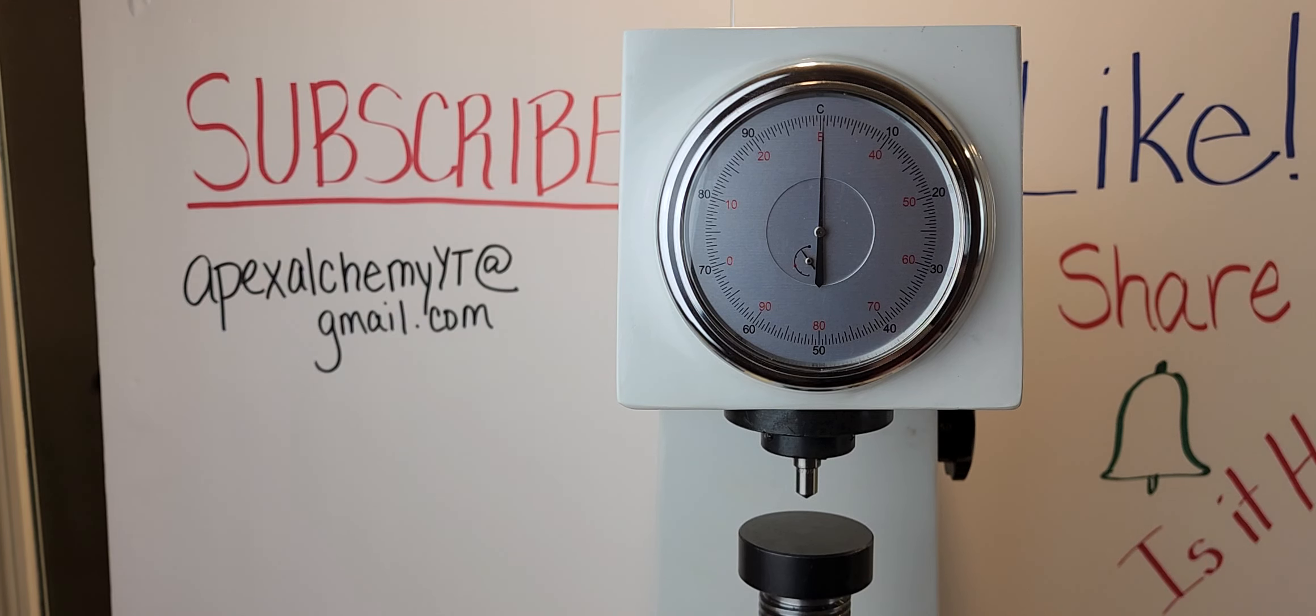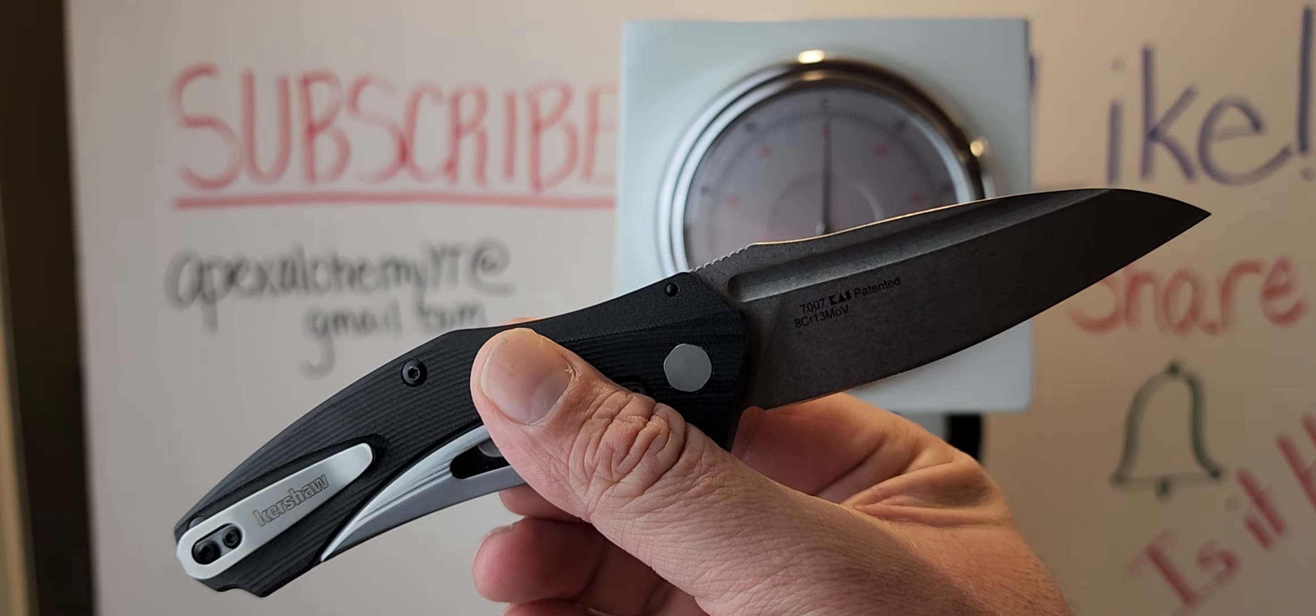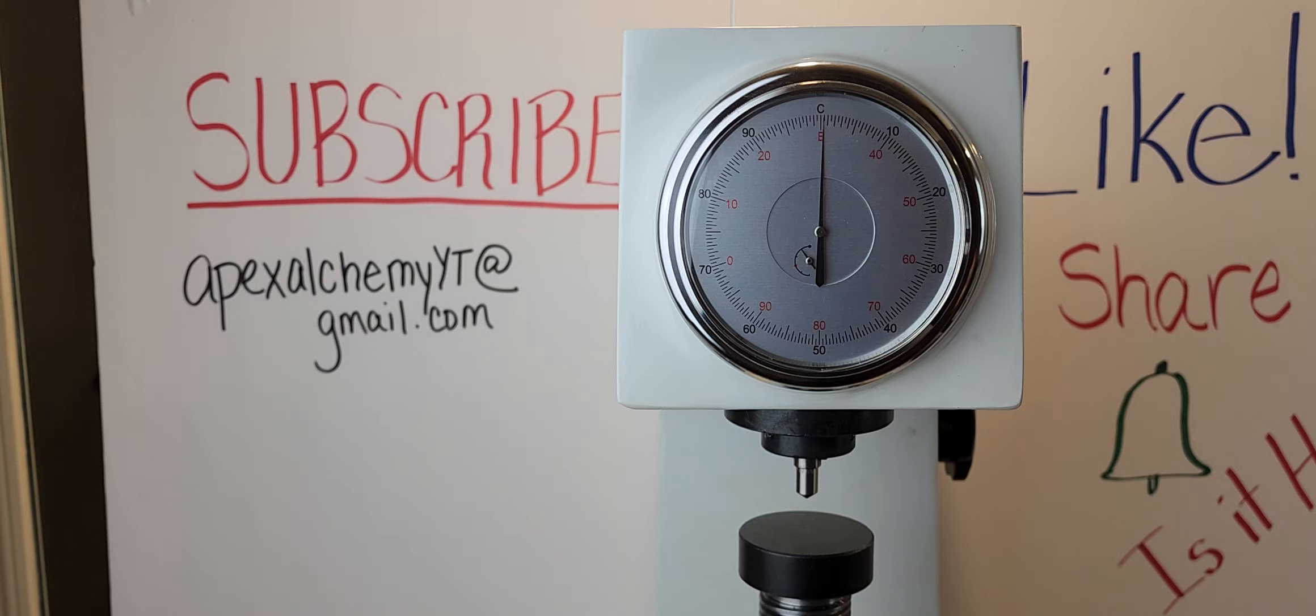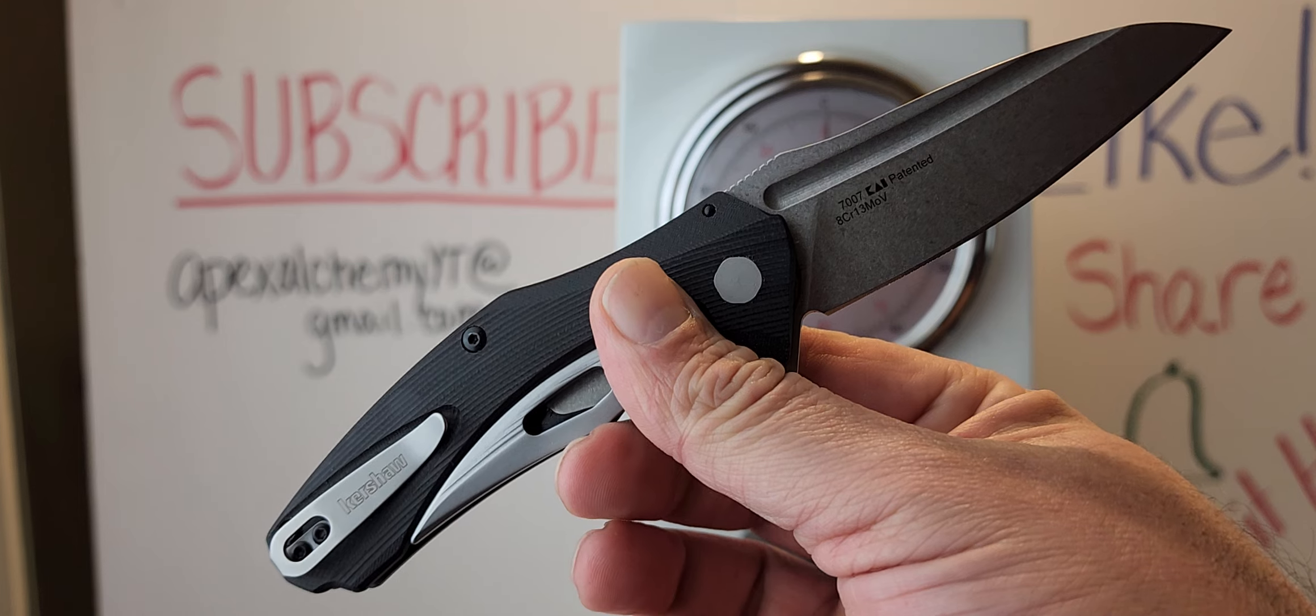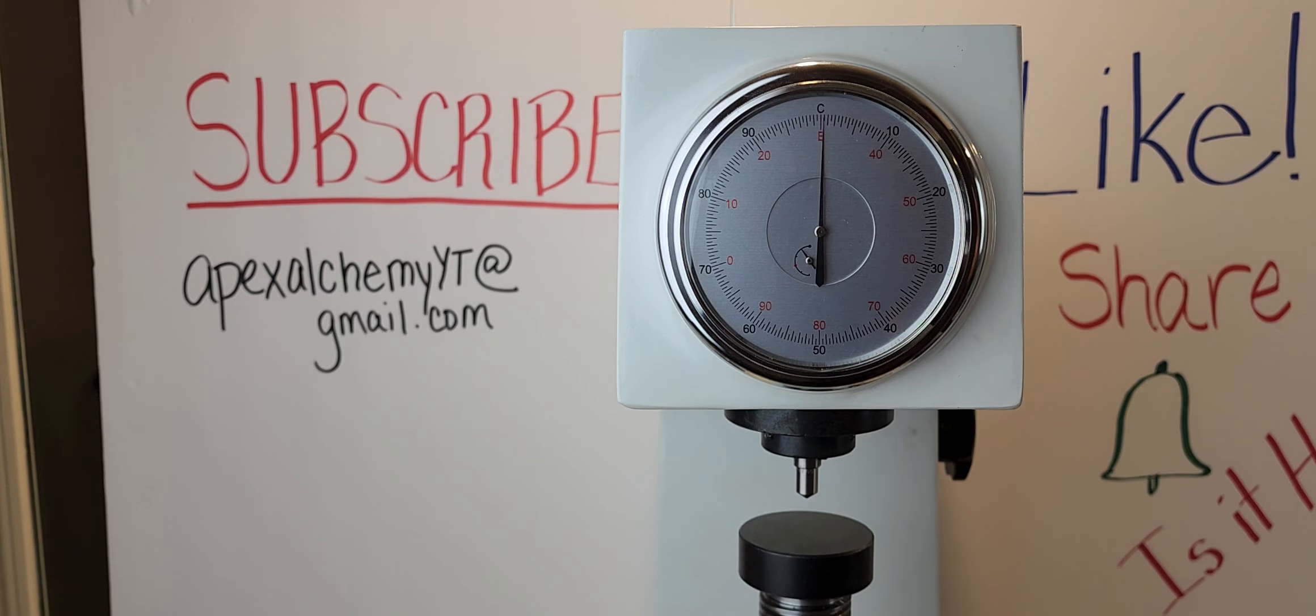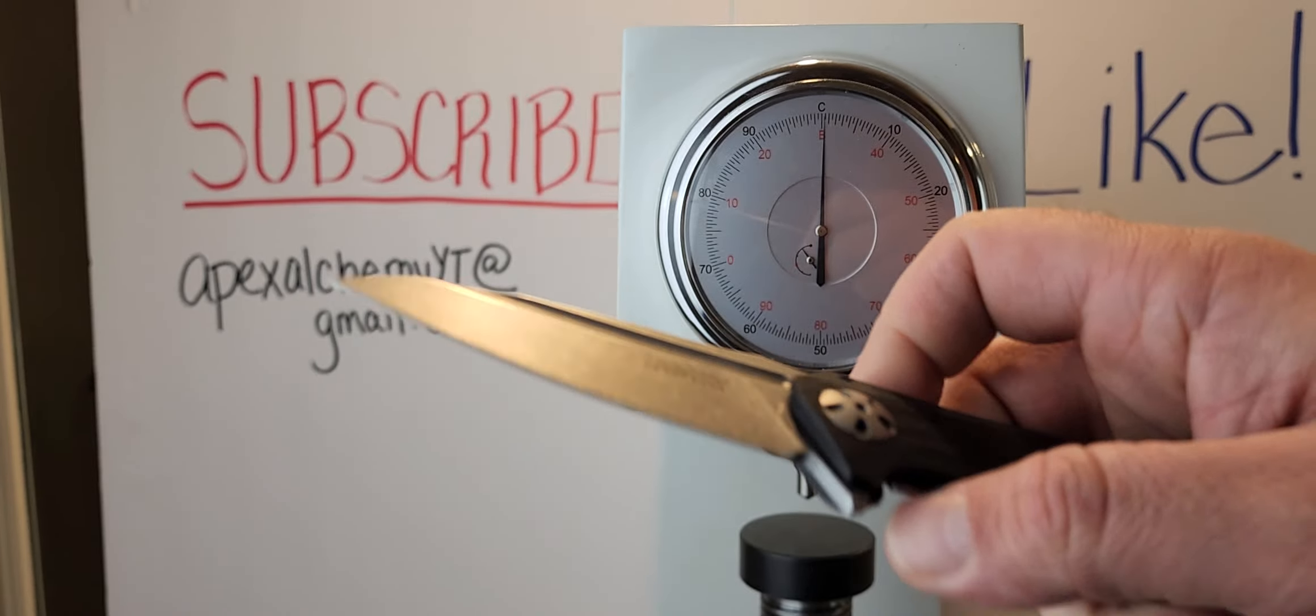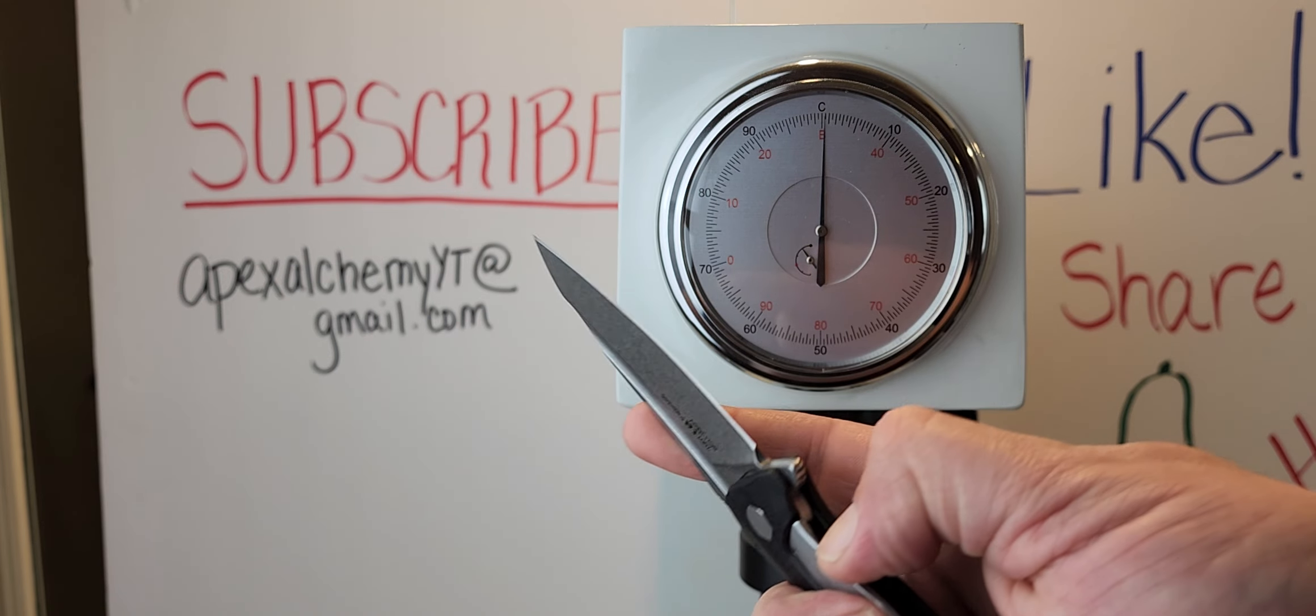Oh man, if y'all think that Buck 420 HC is a super steel, get a load of this 8Cr13MoV. It's Kershaw, the Natrix, twenty dollar knife. You can get it at DNK Knives for twenty-two dollars. Use a discount code, you can use Behind The Edge 10, probably BTE10, or our discount code may still be active, Apex 10, and you can get it for twenty dollars even.